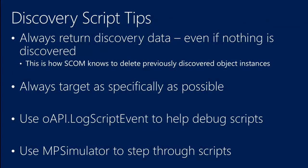There are two ways to debug scripts. The old school way is using the LogScriptEvent method, which writes to the Operations Manager event log so you can see what's happening as the script runs. I include these in all my scripts with a way to turn them on and off — by default they're off, but if you encounter a production issue you can turn on logging. The second way is using the MP Simulator to actually step through your script using Visual Studio's debugging tools with breakpoints and variable inspection.